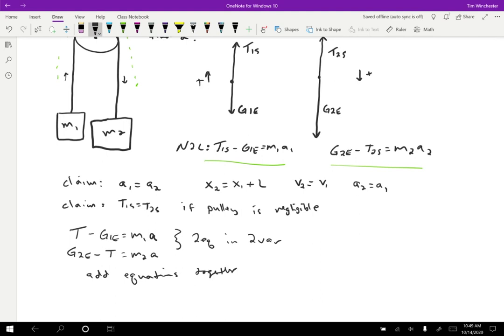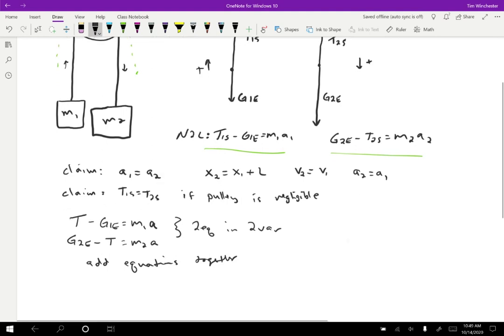On the left, I have tension minus G1E plus G2E minus tension. I'm getting a tension and a minus tension, so that's going to leave me with G2E minus G1E equals M1A plus M2A on the right-hand side.